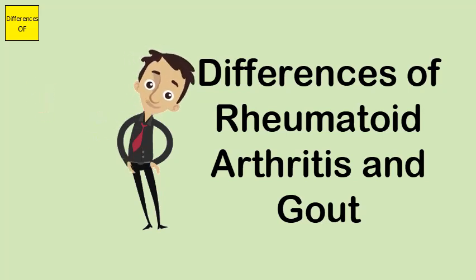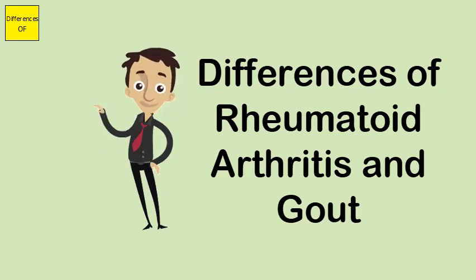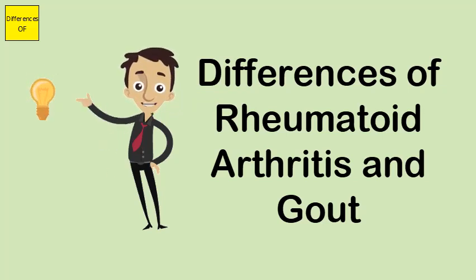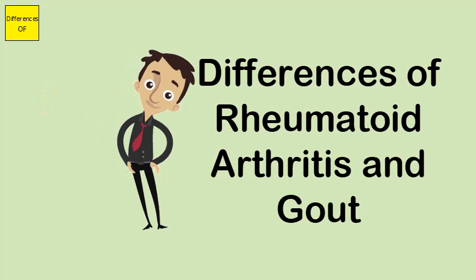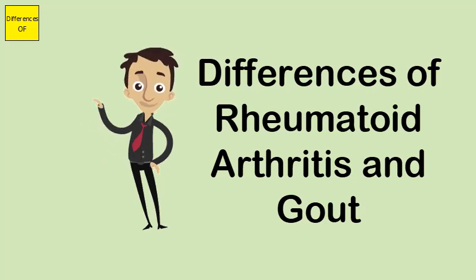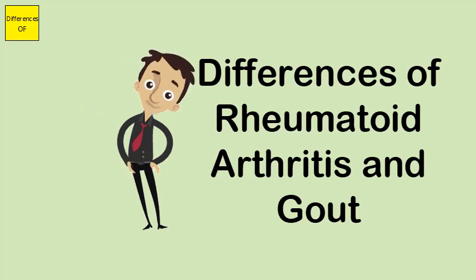RA has symptoms like dull pain and inflammation, frequent fatigue, stiffness, ulnar deviation, muscle atrophy, and swelling of the knuckles. Gout has symptoms like chills and mild fever, along with a general feeling of malaise.